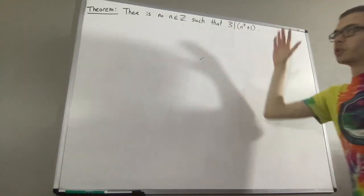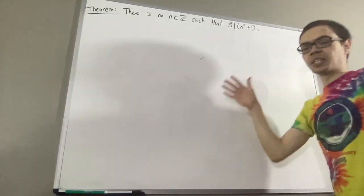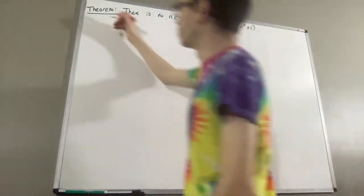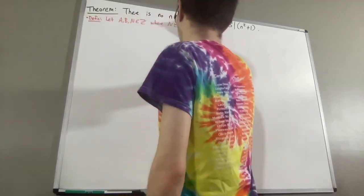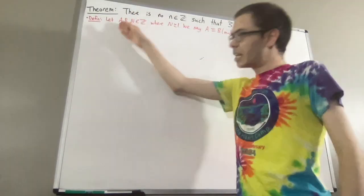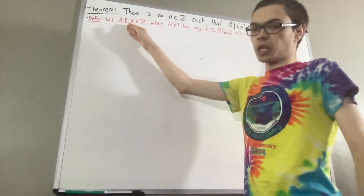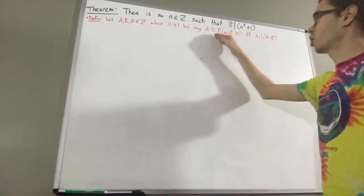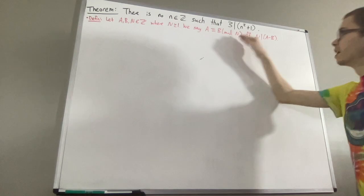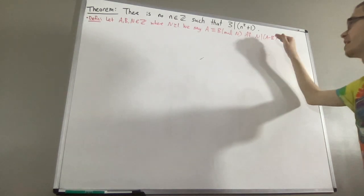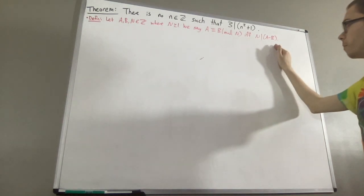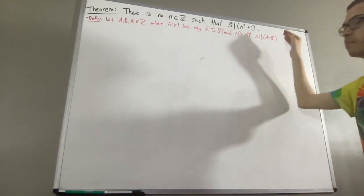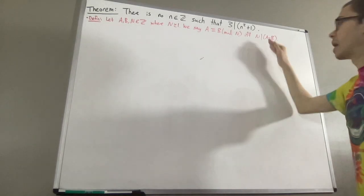To prove this, we're going to be using modular arithmetic. So let's recall the following definition. Let a and b be integers, and let n be a positive integer. We say a is congruent to b mod n if n divides a minus b. Or another way of putting it is a and b differ by a multiple of n.